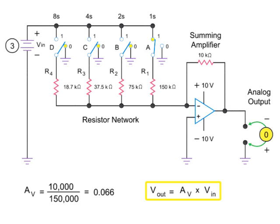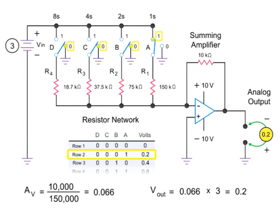Now, the output voltage can be calculated by multiplying the gain by the input voltage of 3 volts. Thus, the product of the amplifier gain of 0.066 and 3 volts is 0.2 volts. Thus, a binary input of 0.001 yields an output of 0.2 volts in accordance with the truth table described previously.